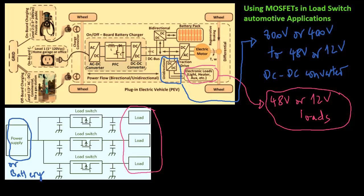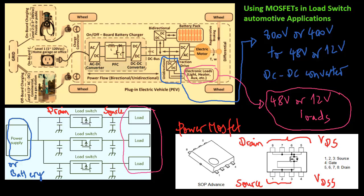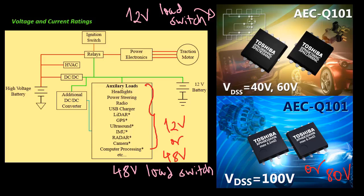Drain-source voltage VDSS rating is important in selecting MOSFETs. Application of a voltage exceeding VDSS might result in the destruction of a MOSFET. For 12 volt applications as well as 48 volt applications, the 40 volt and 80 volt MOSFETs are used respectively.